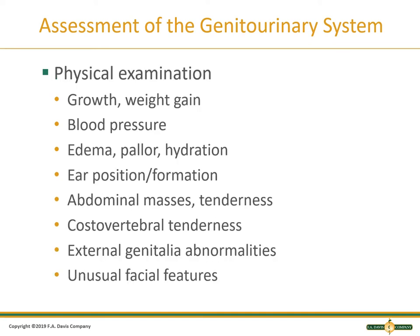Looking at the physical examination: blood pressure, edema, hydration, and looking at ear position. We're looking for low-set ears because there's a higher incidence of chromosomal abnormalities with renal issues. Also assess abdominal masses, tenderness, CVA tenderness, external genitalia abnormalities — do they have both testicles, is there an undescended testicle — and any unusual facial features, as these point to genetic risk factors.